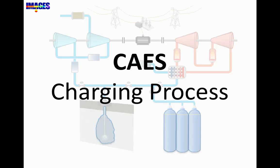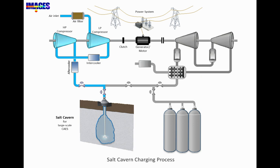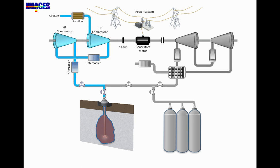First, let's take a look at the charging process. During the periods of low power demand, the surplus electricity drives a reversible motor-generator unit to run a chain of compressors for injecting air into a storage vessel. For large-scale systems, a high-capacity underground salt cavern is used. The energy is stored in the form of high-pressure air, with the pressure typically 40 to 80 bar.